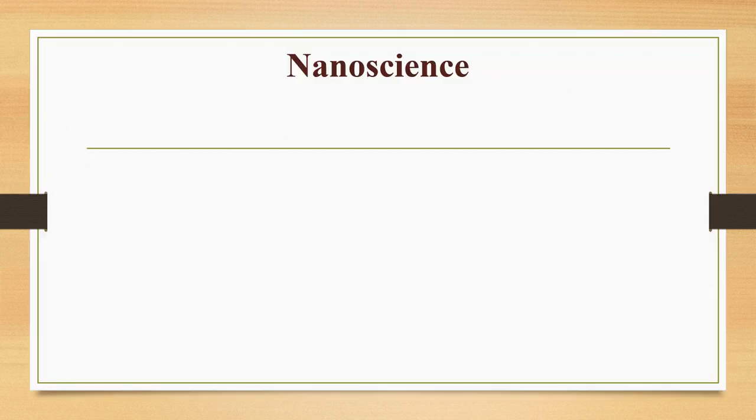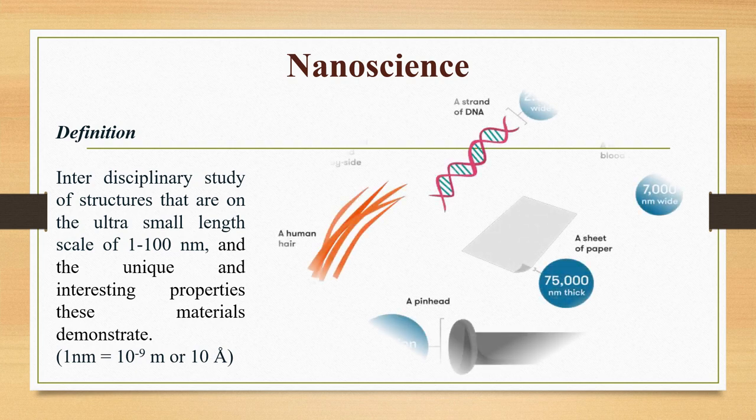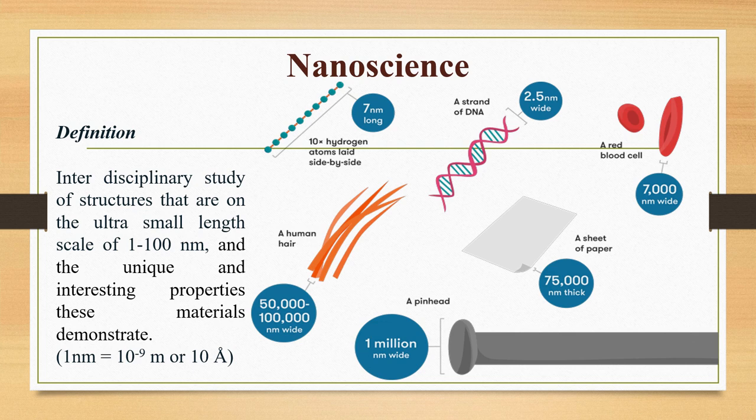Let us begin with nanoscience. Nanoscience by definition is an interdisciplinary study of structures on the ultra-small length scale of 1 to 100 nanometers and the unique and interesting properties these materials demonstrate. To give you some idea of the nanoscale, 10 hydrogen atoms laid side by side measure a nanometer across. A strand of DNA is 2.5 nanometers in diameter while a red blood cell is about 7,000 nanometers wide.